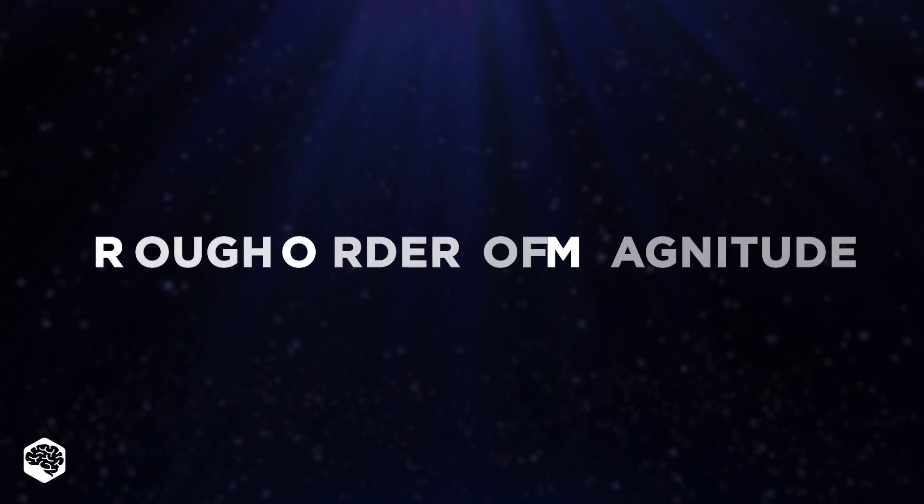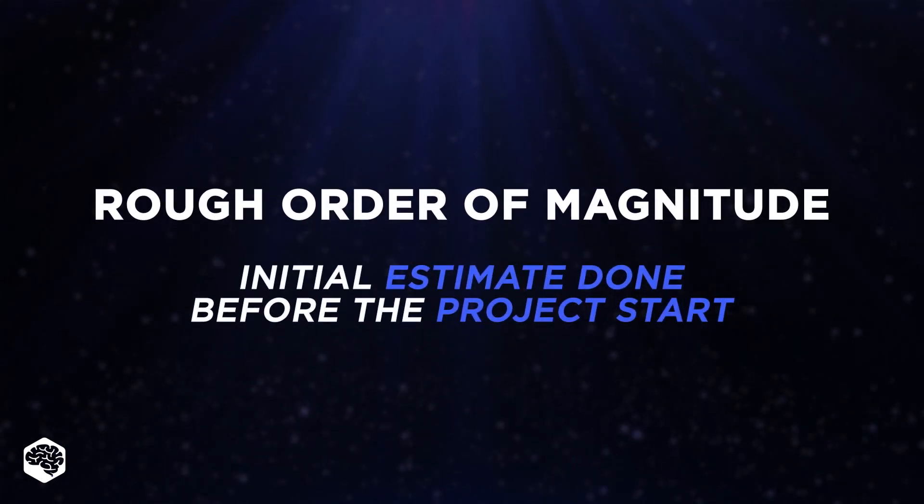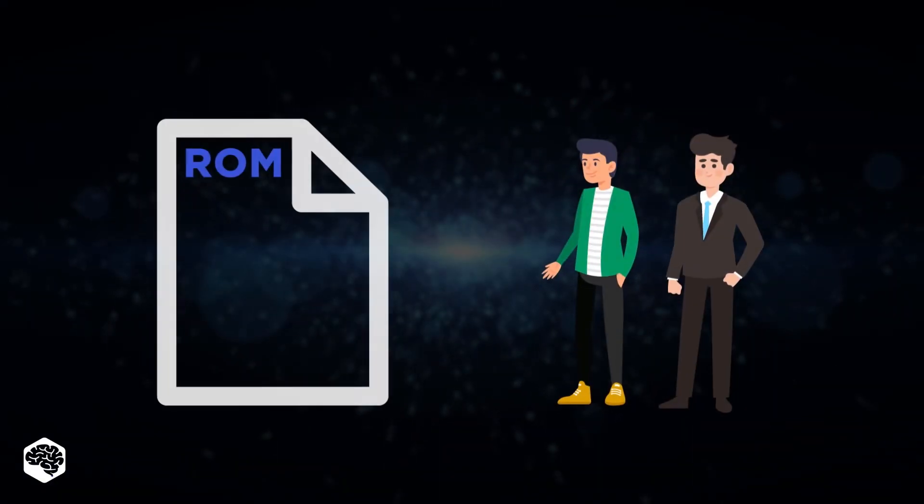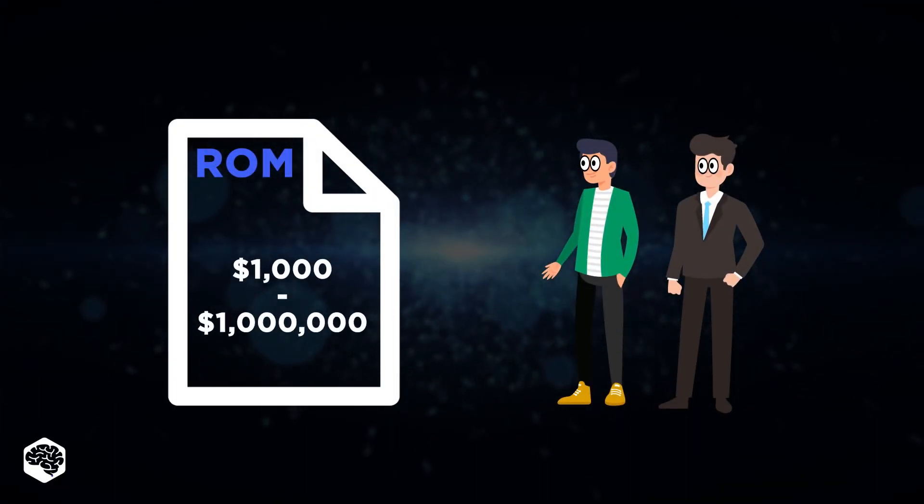ROM Estimate, which stands for Rough Order of Magnitude, is the initial estimate that is often done before a project is started. It aims to provide stakeholders and decision-makers with an idea of the approximate cost of the projects.